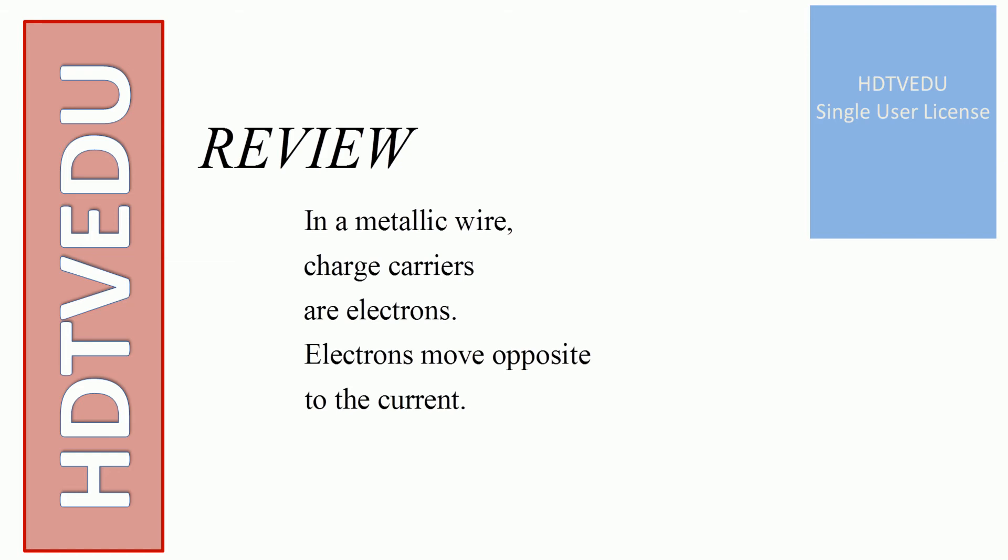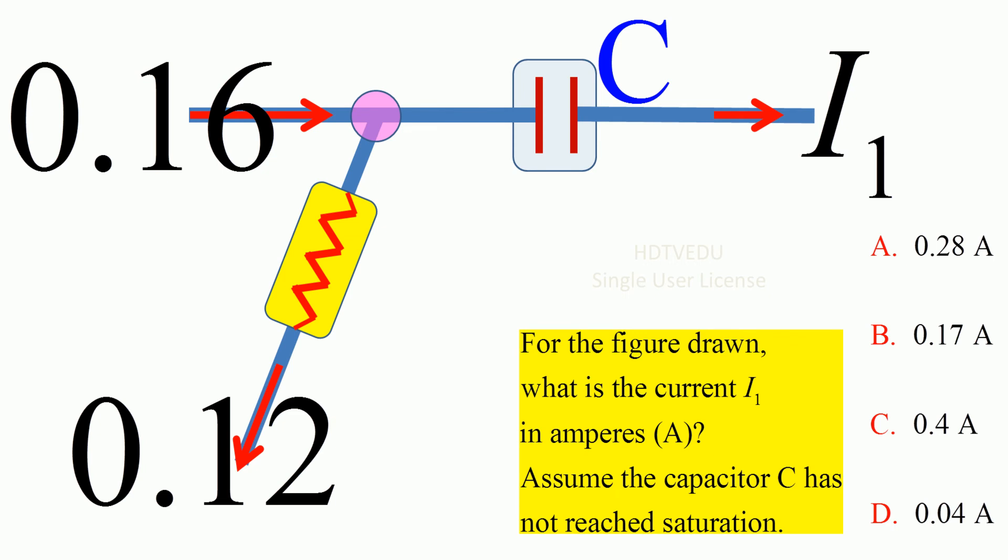So here we have 0.16 entering, 0.12 leaving, and we have I1 leaving. And what is entering? Current entering is equal to what is current entering? 0.16. So you say 0.16 is equal to current leaving, I1 plus 0.12.